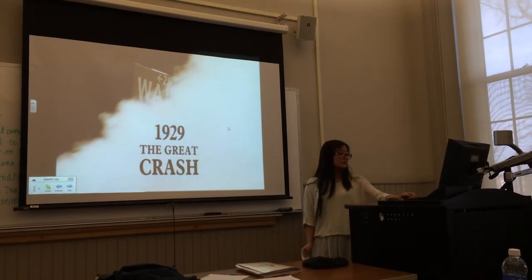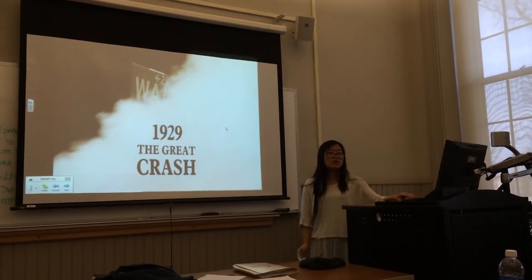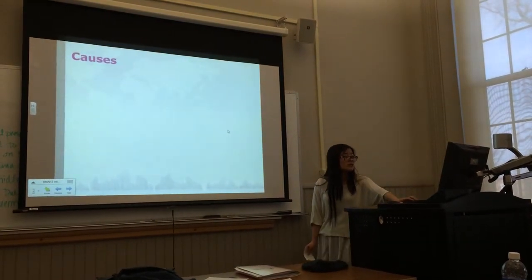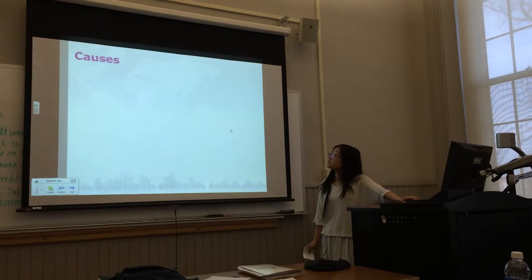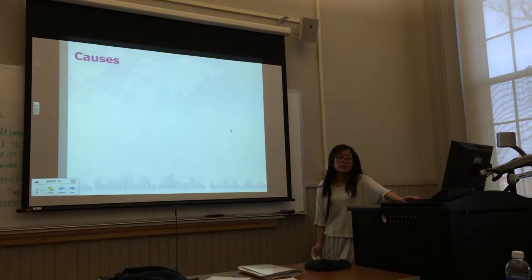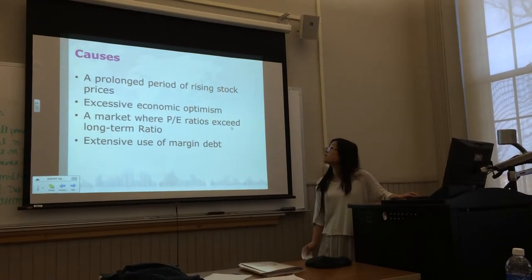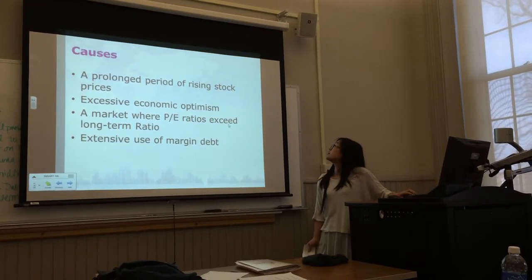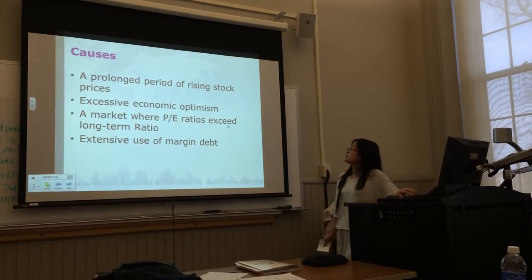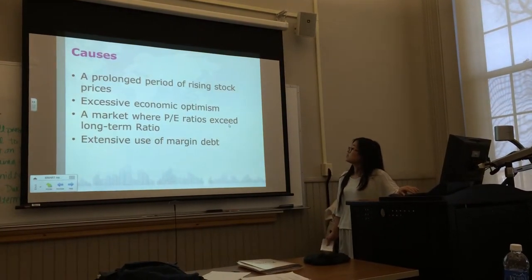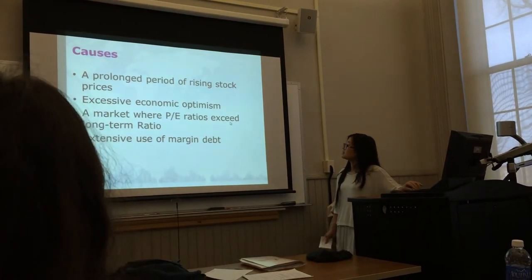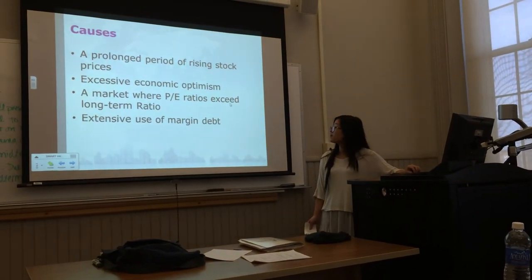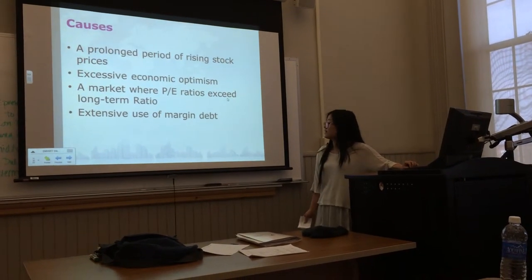Today I will pay more attention to the stock market crash of 1929, and I will explain four major causes that resulted in it. First is a prolonged period of rising stock prices. Second is excessive economic optimism. Third is a market where the P/E ratio exceeds the long-term ratio. And the last is extensive use of margin debt.